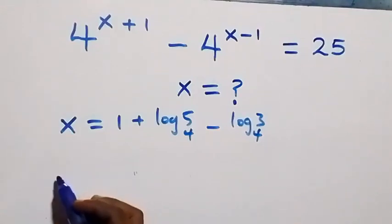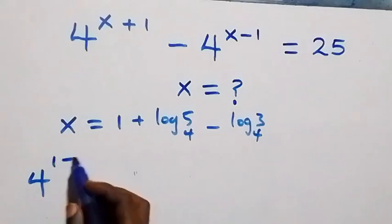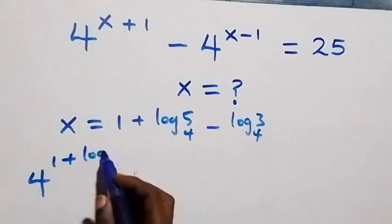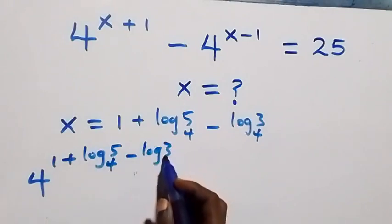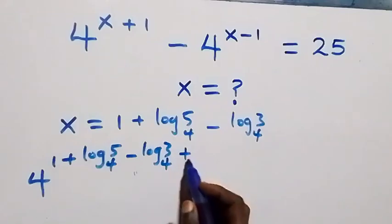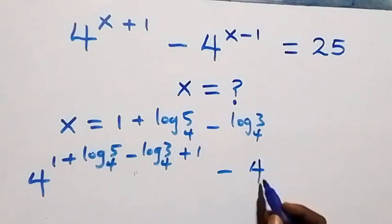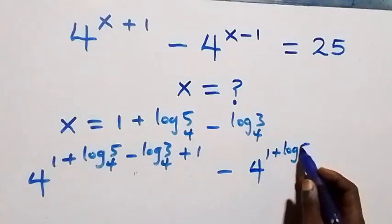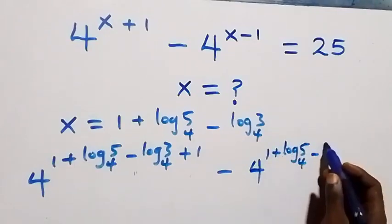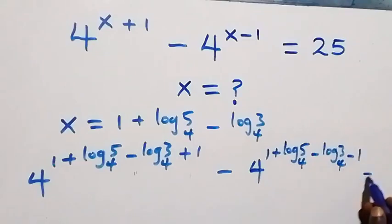Substituting x equals 1 plus log 5 to base 4 minus log 3 to base 4 into the equation: four raised to power (1 plus log 5 base 4 minus log 3 base 4 plus 1) minus four raised to power (1 plus log 5 base 4 minus log 3 base 4 minus 1) equals 25.